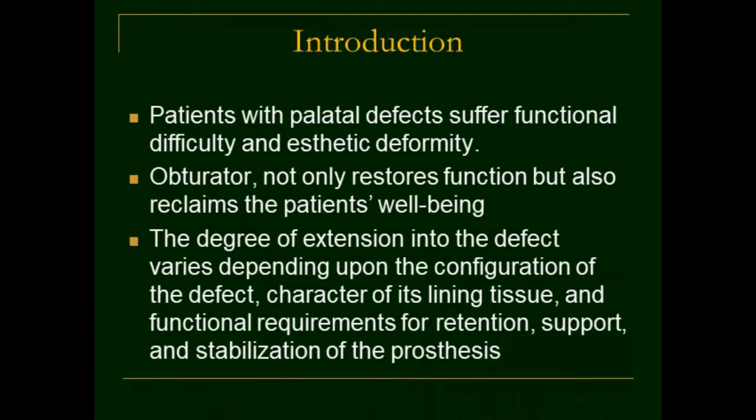Patients with palatal defects suffer functional difficulty and aesthetic deformity. The maxillofacial prosthodontist replaces the lost tissue by an obturator, which not only restores function but also reclaims the patient's well-being. An obturator is a prosthesis to close a palatal defect in a dentulous or edentulous mouth, and the degree of extension depends upon the configuration of the defect, the character of its lining tissue, and functional requirements for retention, support and stabilization. The remaining structures are subjected to continuous stress from such large heavy obturators, jeopardizing tissue health. One method to reduce bulk is to fabricate a hollow bulb obturator, which reduces the weight of the prosthesis, improving patient comfort.